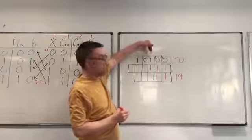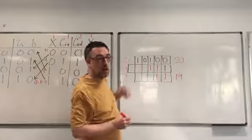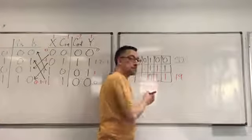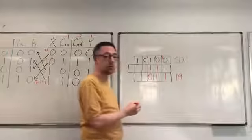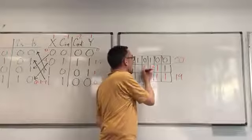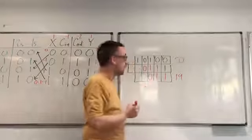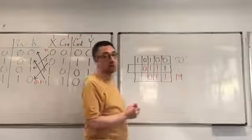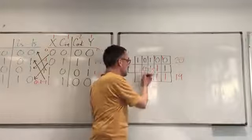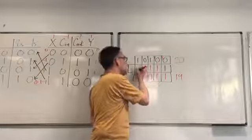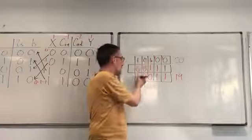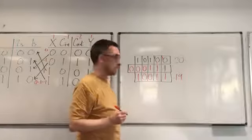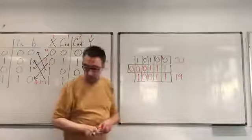Now in this column we finally get a 1 that we can subtract from. 1 take away 1 is 0, and we don't need to pay anything back in the next column. We've found something to subtract from and we're done. 0 from 0 is 0, nothing to pay back. 0 from 1 is 1, and we end up with a 0 in the last carry.